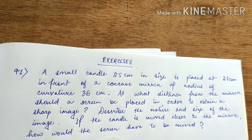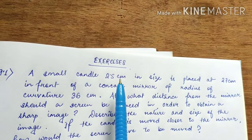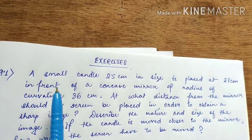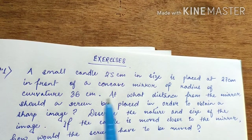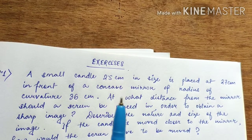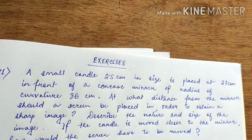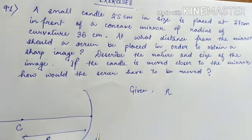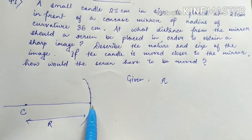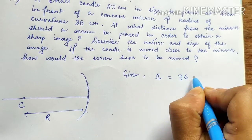Exercise number one: a small candle 2.5 cm in size is placed 27 cm in front of a concave mirror of radius of curvature 36 cm.